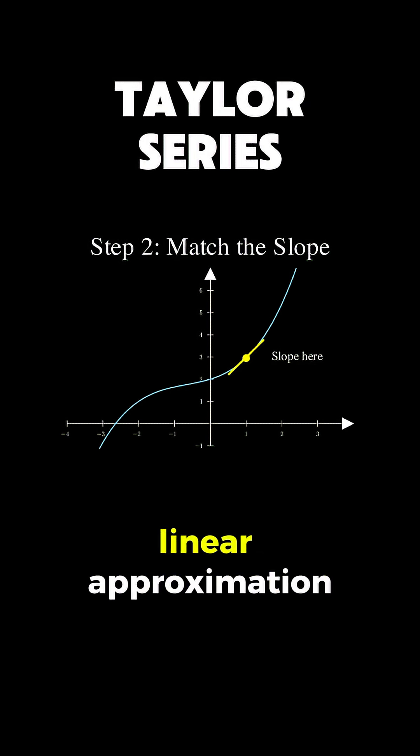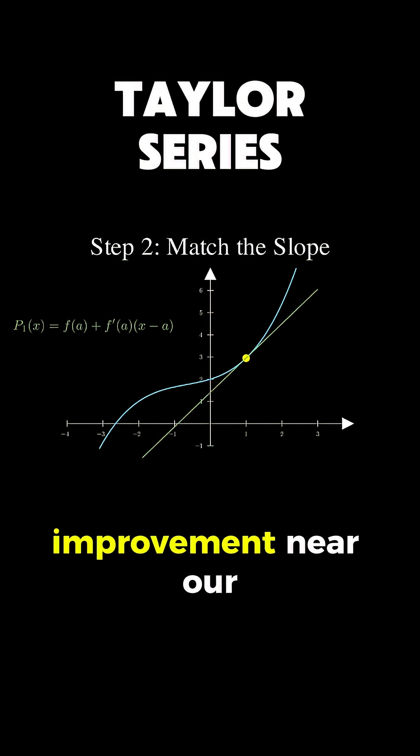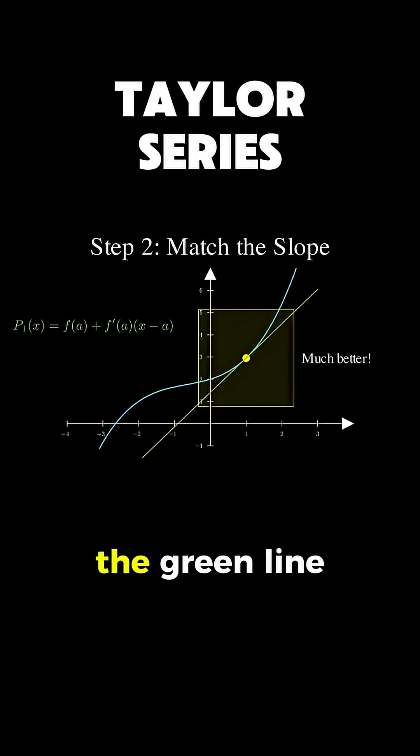Now we get a linear approximation, a straight line that not only passes through our point, but also has the same steepness as the original function right there. Look at the improvement. Near our point of interest, the green line follows the blue curve much more closely. We're capturing not just where the function is, but also which direction it's heading and how fast. It's like knowing both a car's position and its velocity. Suddenly, you can predict where it'll be in the near future. But we can do even better.